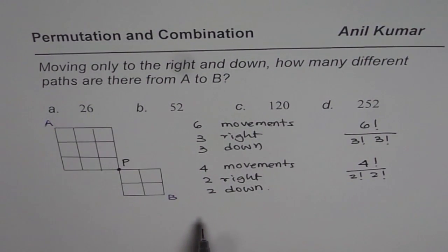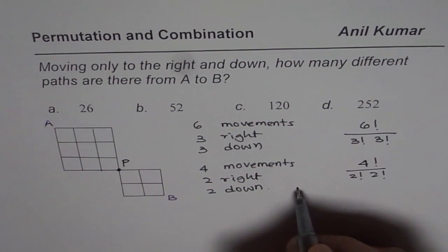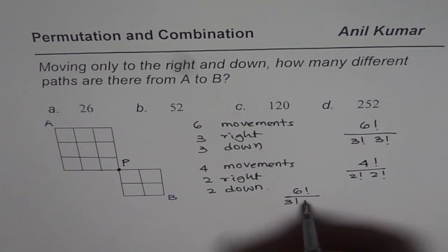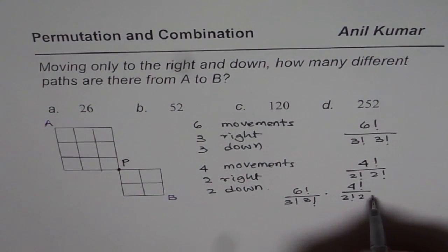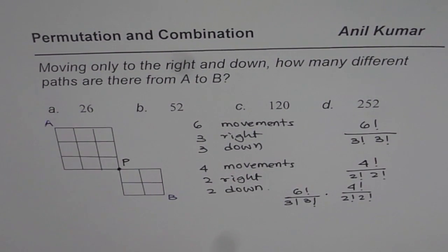Total number of paths will be their product. That is the counting principle. So our answer will be 6! over 3! × 3! times 4! over 2! × 2!. That is how you have to solve it.